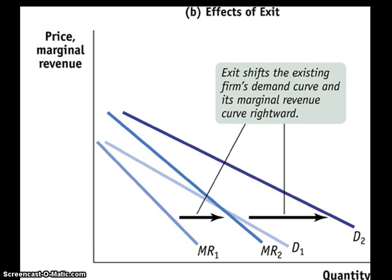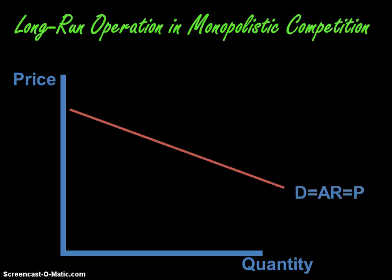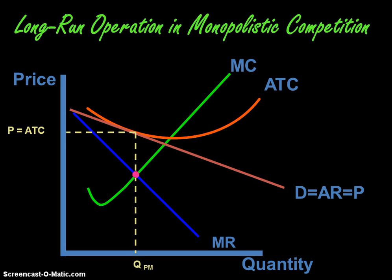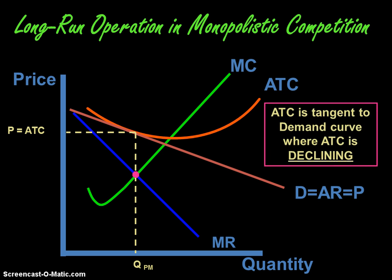When firms are losing money and the least efficient firms exit, the firms that can stick it out and stay in the industry are going to experience a shift in their demand and marginal revenue curves — they're going to go to the right and become more inelastic. This shifting back and forth is going to happen until the long-run equilibrium position is achieved, where firms are breaking even at their profit-maximizing level of output. The demand and marginal revenue curves are going to shift left and right as firms exit and enter the industry until each producer reaches this equilibrium.